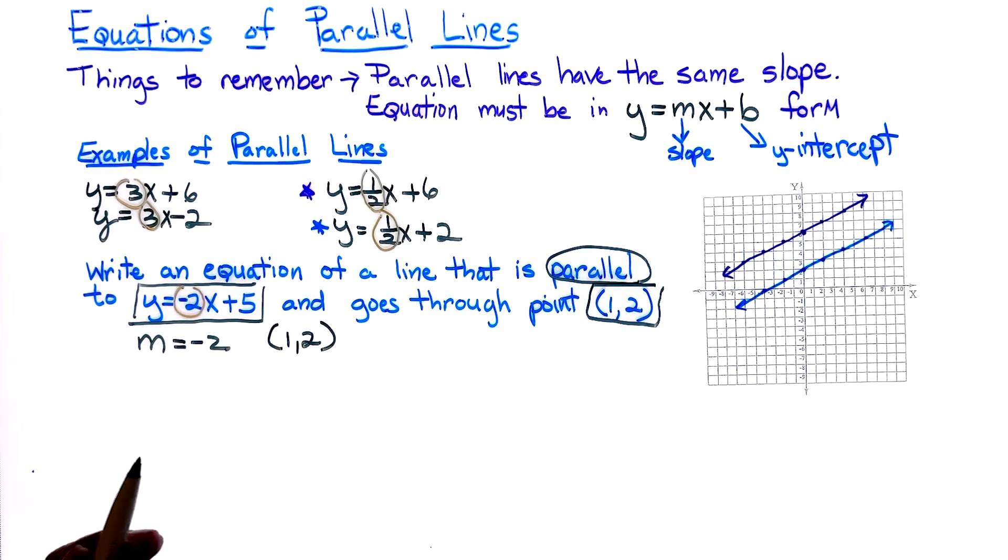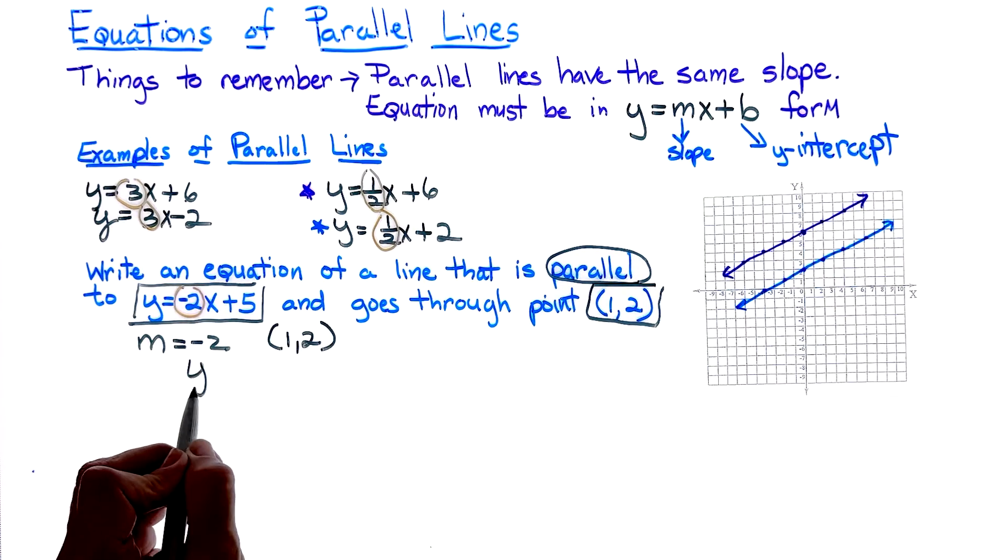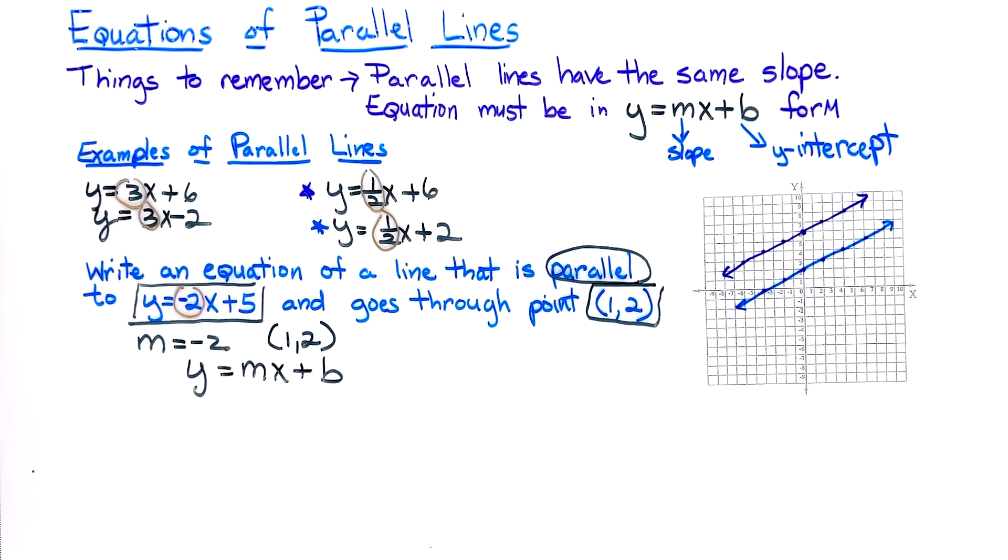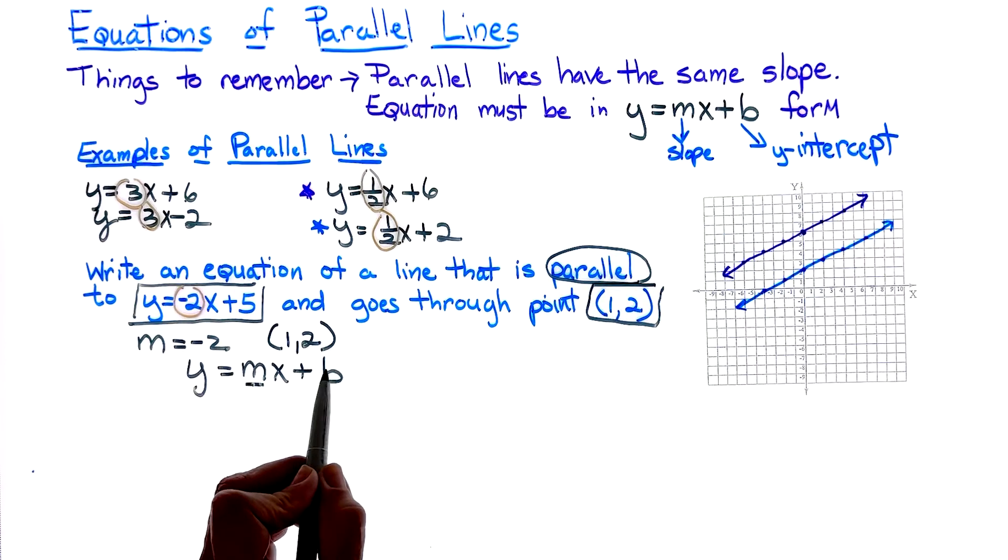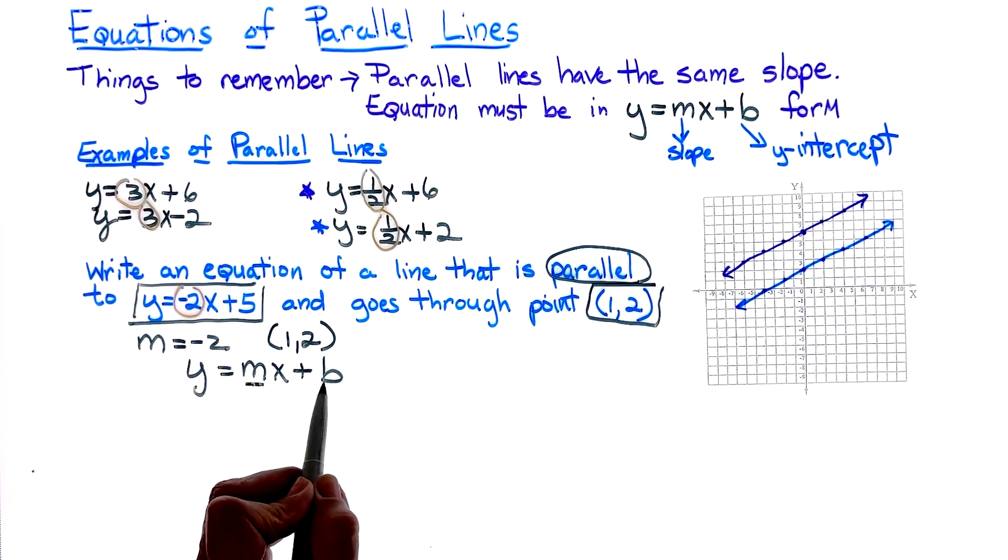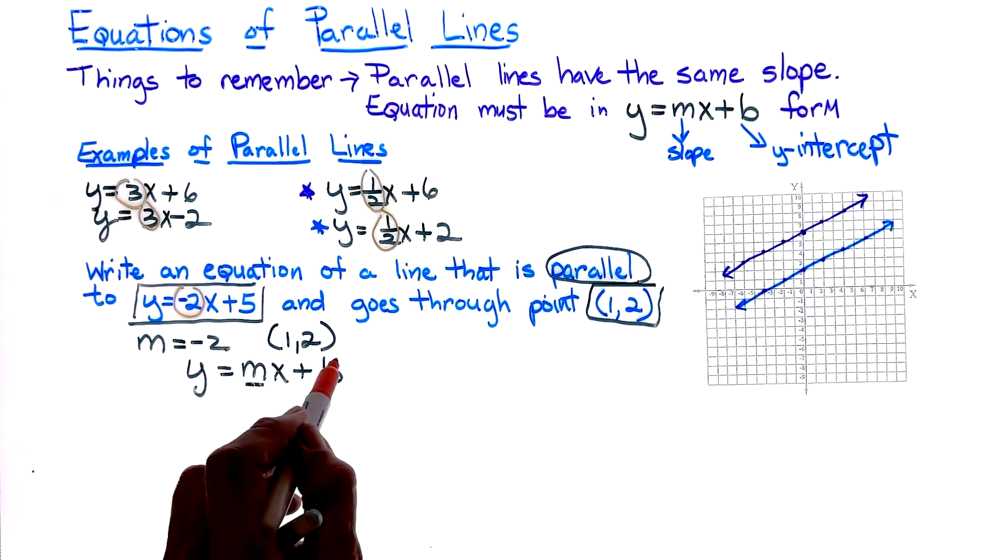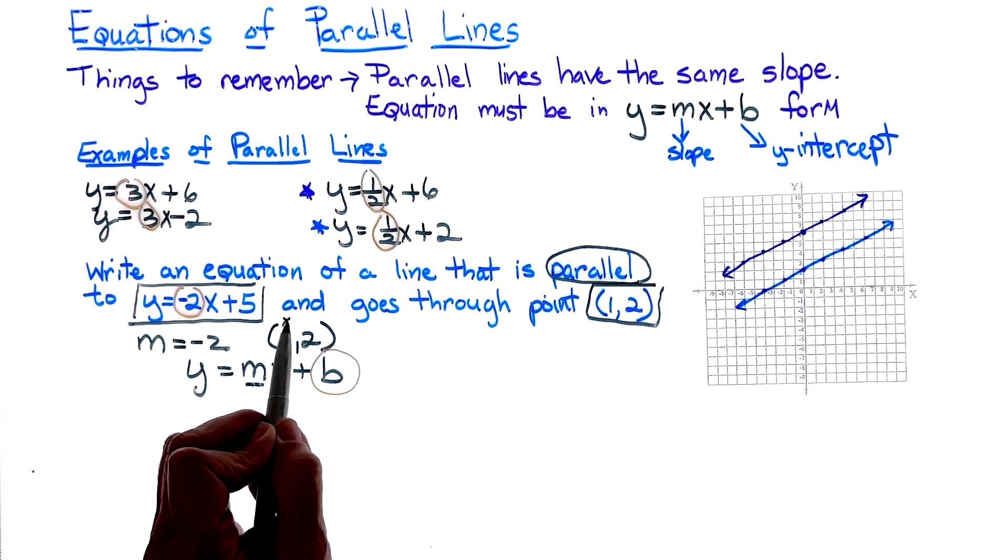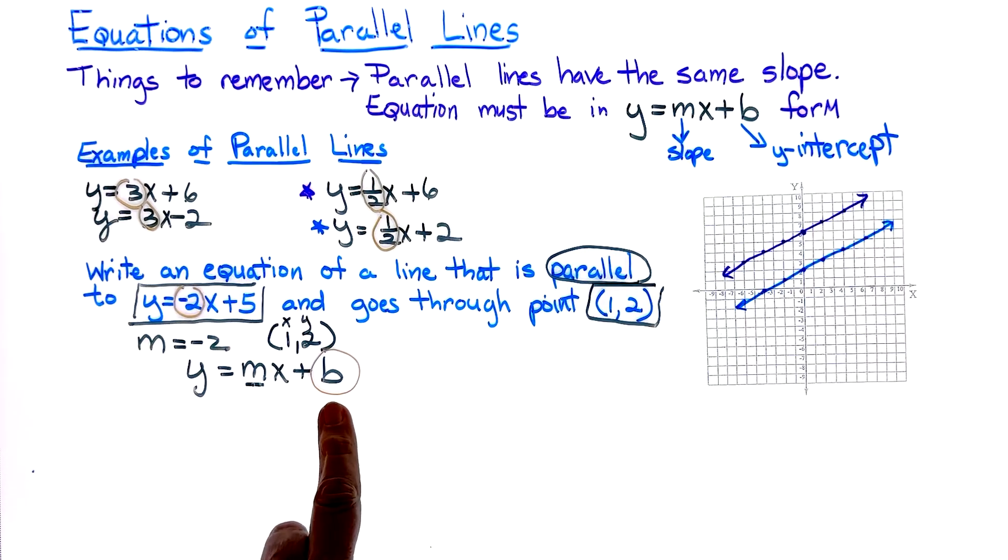What I'm going to try to find now, remember it's y equals mx plus b is the format. We know the slope, we need to find, we do not know our letter b. And how we find where it crosses the y axis is we're going to substitute in these values that have been given to us to find our letter b.